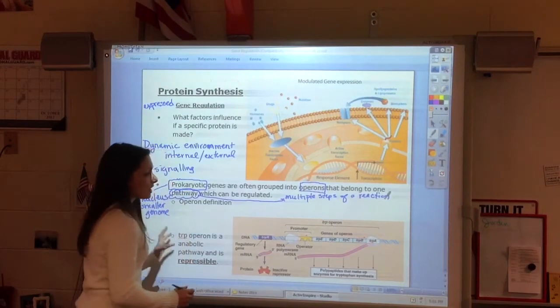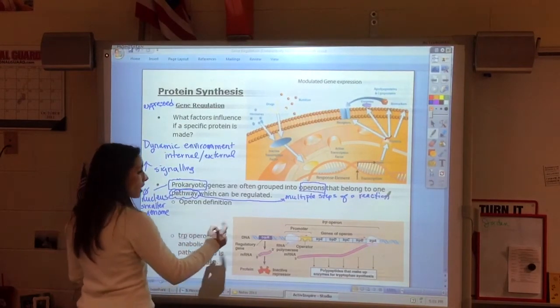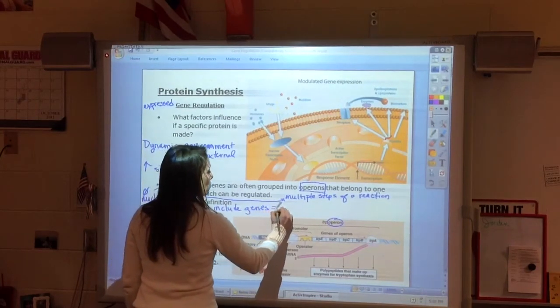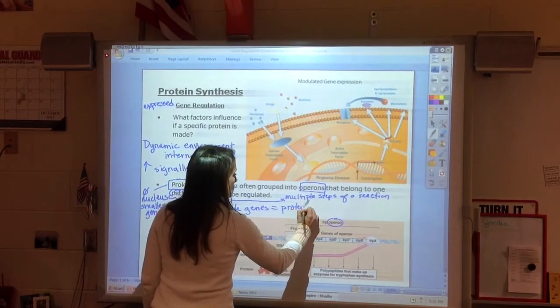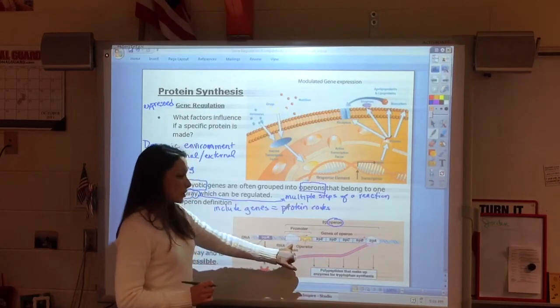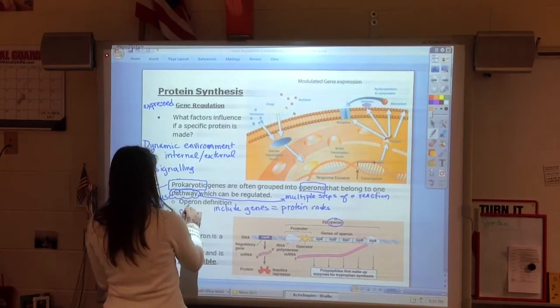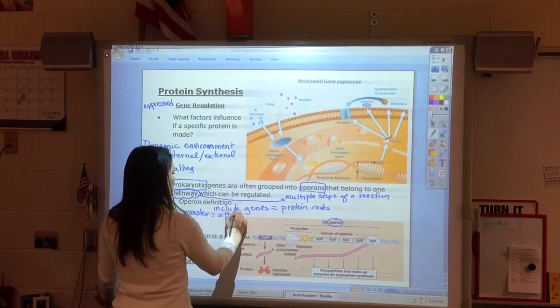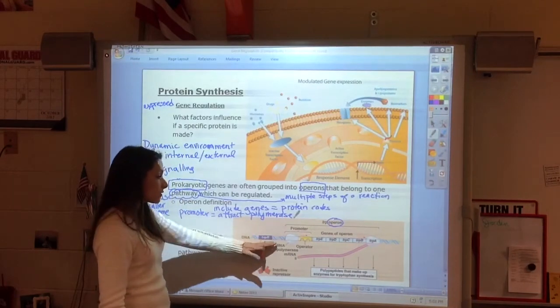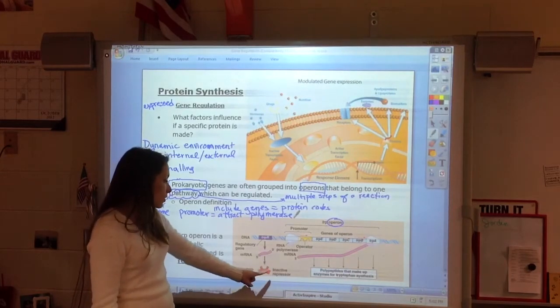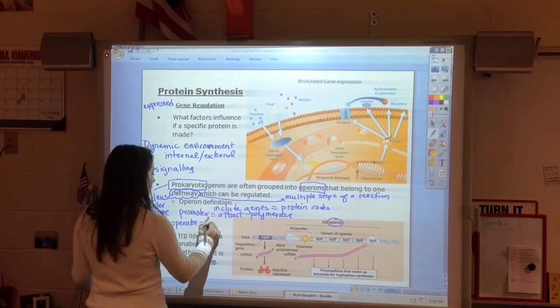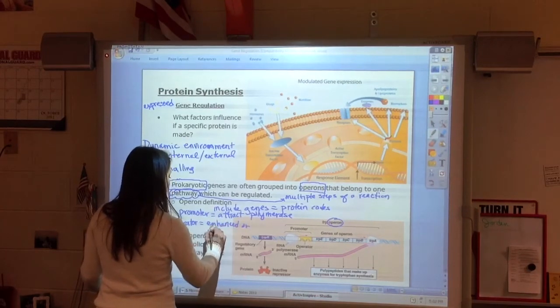An operon will include genes that will produce proteins, codes for proteins. But it also includes what we call a promoter region. We already know the promoter region, this is going to attract the polymerase, like the TATA box. This is where the transcription factors are going to assemble. But we're also going to see something called an operator. This is a region that can be enhanced or it can be repressed.